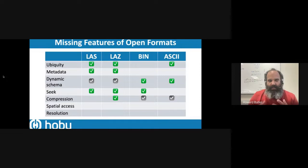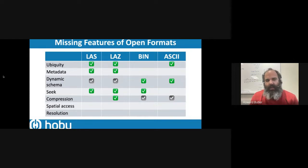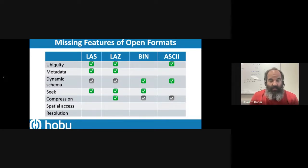If we evaluate what's missing in open formats for geospatial point clouds and do the matrix of capabilities, the two biggest missing pieces are: allow applications to access content spatially instead of sequentially, and allow applications to filter data by resolution. Many proprietary formats have this capability built in, whether in support of convenient visualization or certain kinds of processing applications.